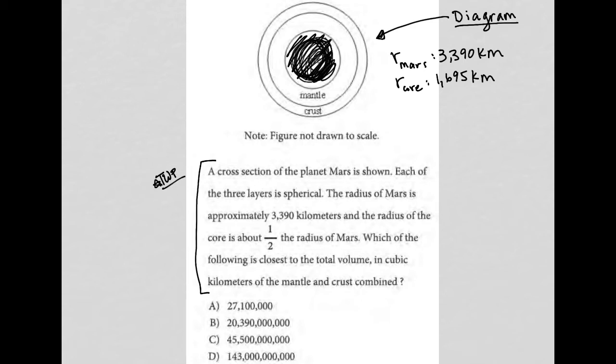And then the white area around it is representative of the volume that we want to find. So, what I'm saying, in math terms at least, is in order to find the volume of the mantle and the crust combined, I can find the volume of Mars and then subtract the volume of the core away from that. And then that should give me the volume of the mantle plus crust.